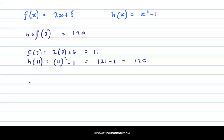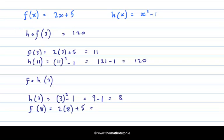Now let's try f after h of 3. First of all, we need to get h of 3, which is 3 squared minus 1, which is 9 minus 1, which is 8. And then we will get f of 8, which is 2 times 8 plus 5, which is 16 plus 5 is 21. So f after h of 3 is 21.